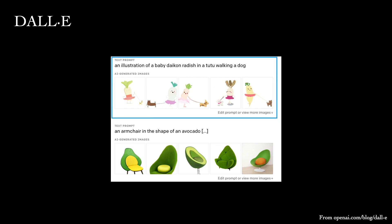In this example, we have this silly text prompt about a baby radish in a tutu walking a dog, and impressively, the model generates images of exactly that.